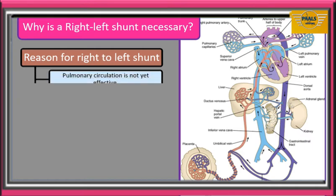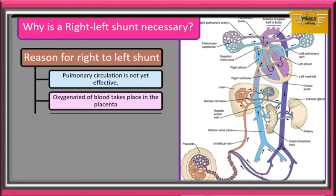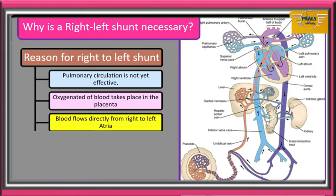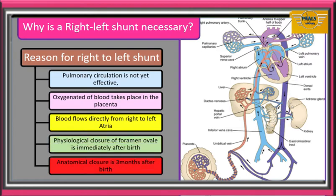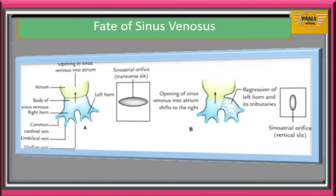This is because the pulmonary circulation in the fetus is not yet effective, and oxygenation at this point is not in the fetal lungs but in the placenta. Oxygenated blood coming from the placenta, delivered to the right atrium through the inferior vena cava, can only enter the left atrium through these openings. After birth, the foramen ovale functionally closes due to higher pressure in the left atrium than the right — this is called physiologic closure. About three months later, the valve of the oval foramen fuses with the septum secundum, forming the fossa ovale — this is called anatomical closure.